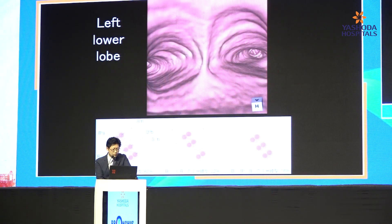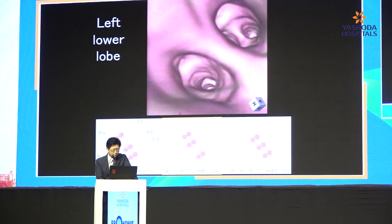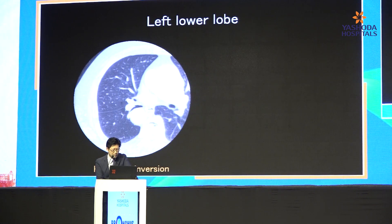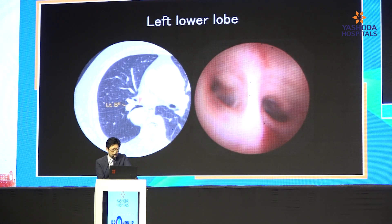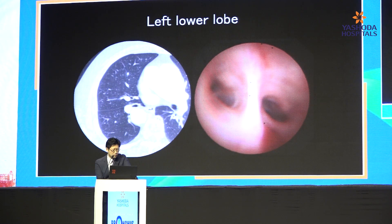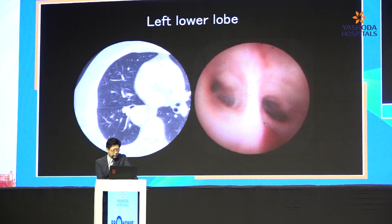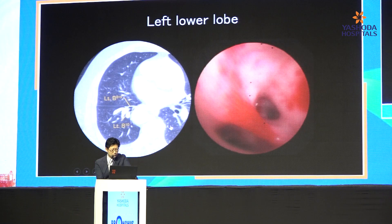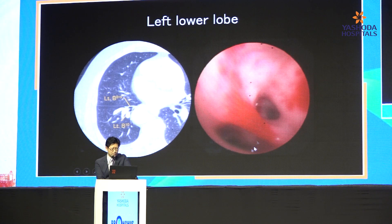And next, to the left lower lobe. The left lower lobe is similar — horizontal inversion image is better. You can see downside B6. Here you can see left side B6 and the basal bronchus. Proceeding to the basal bronchus, it's divided into B8 plus 9 and B10. Upside is B8 plus 9, and B10 is downside.